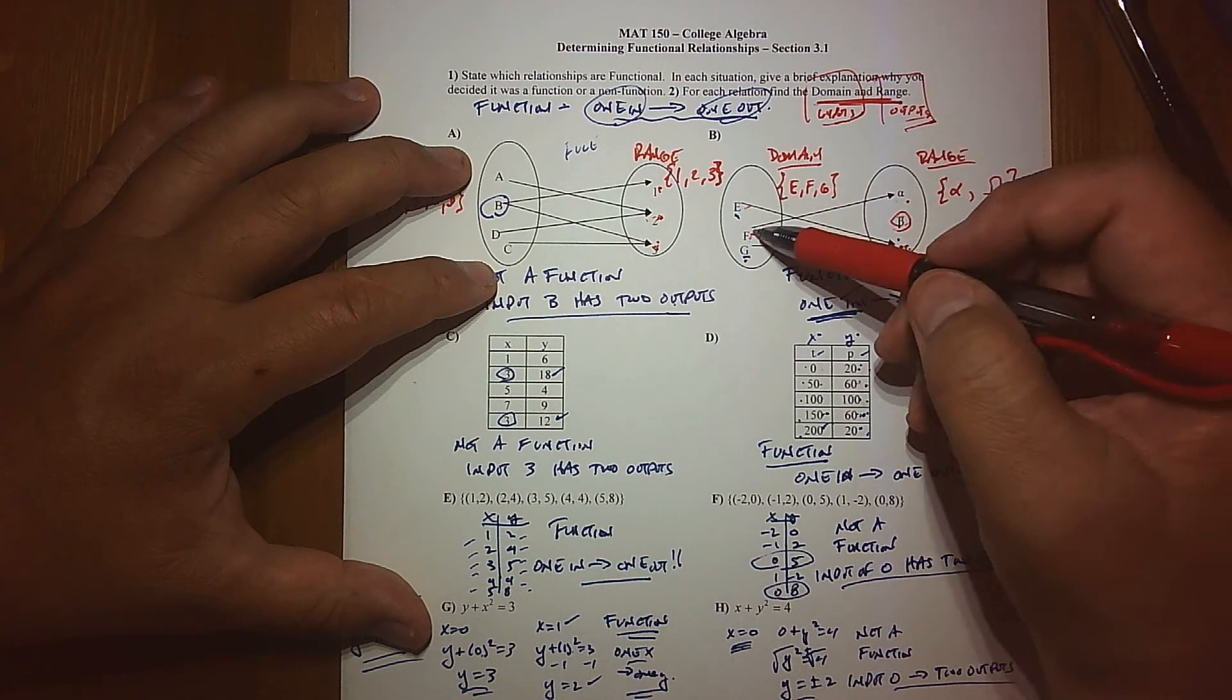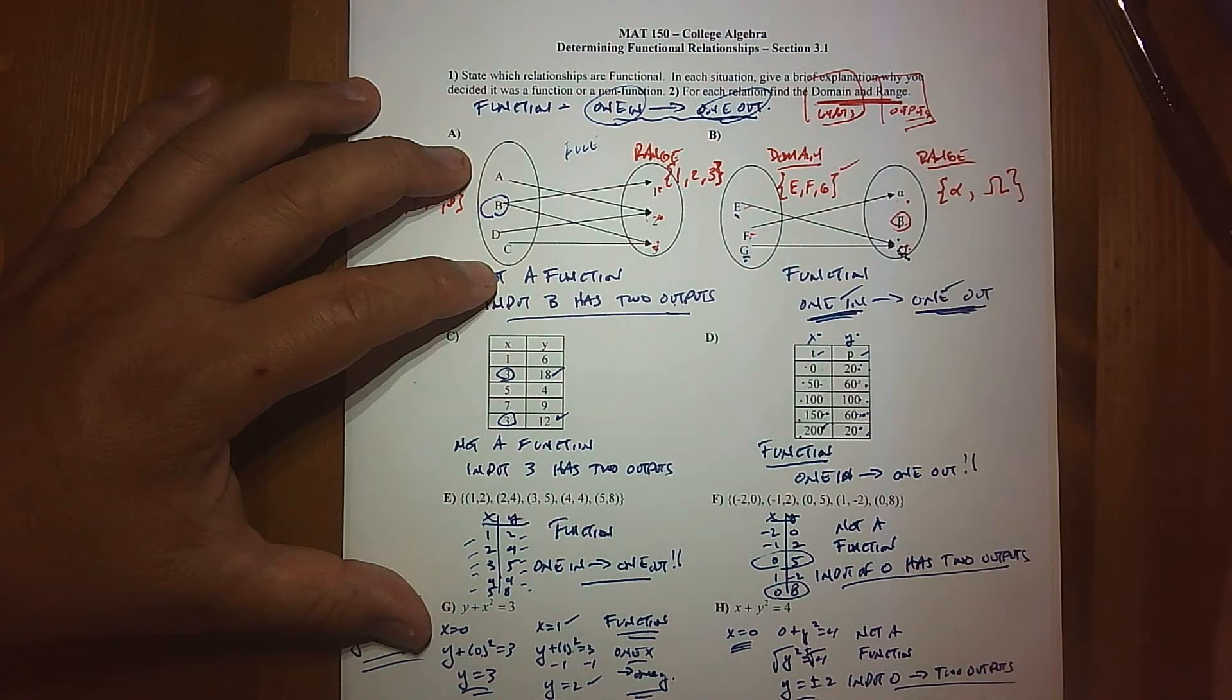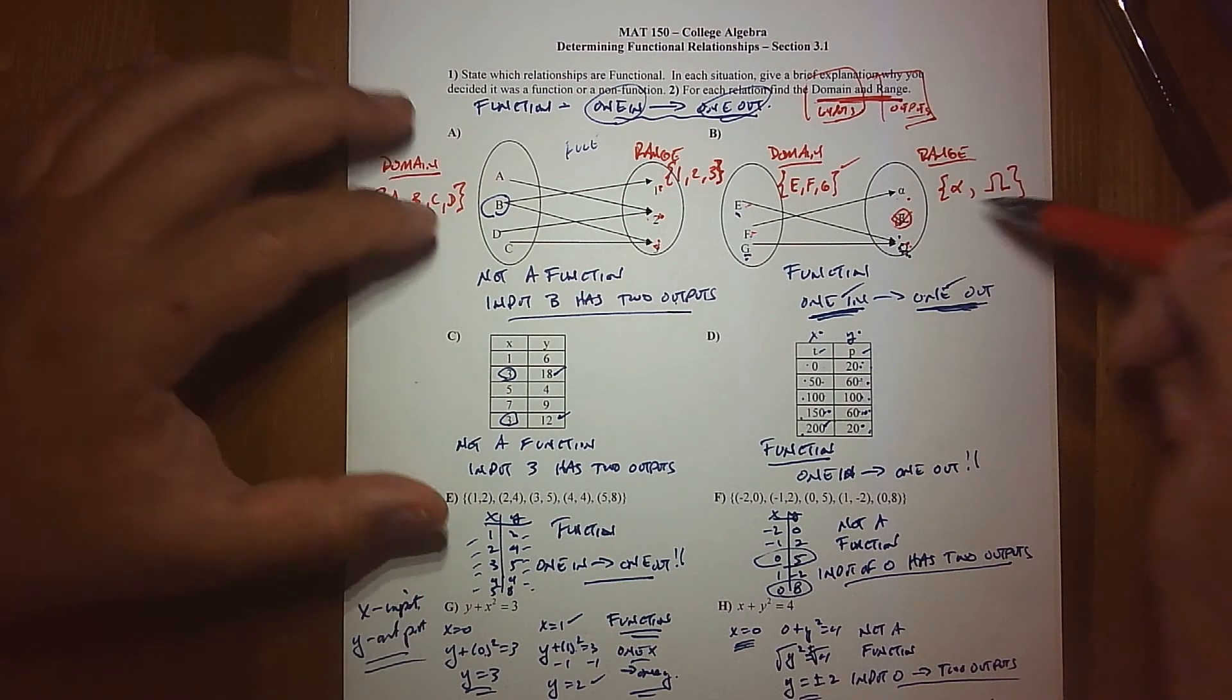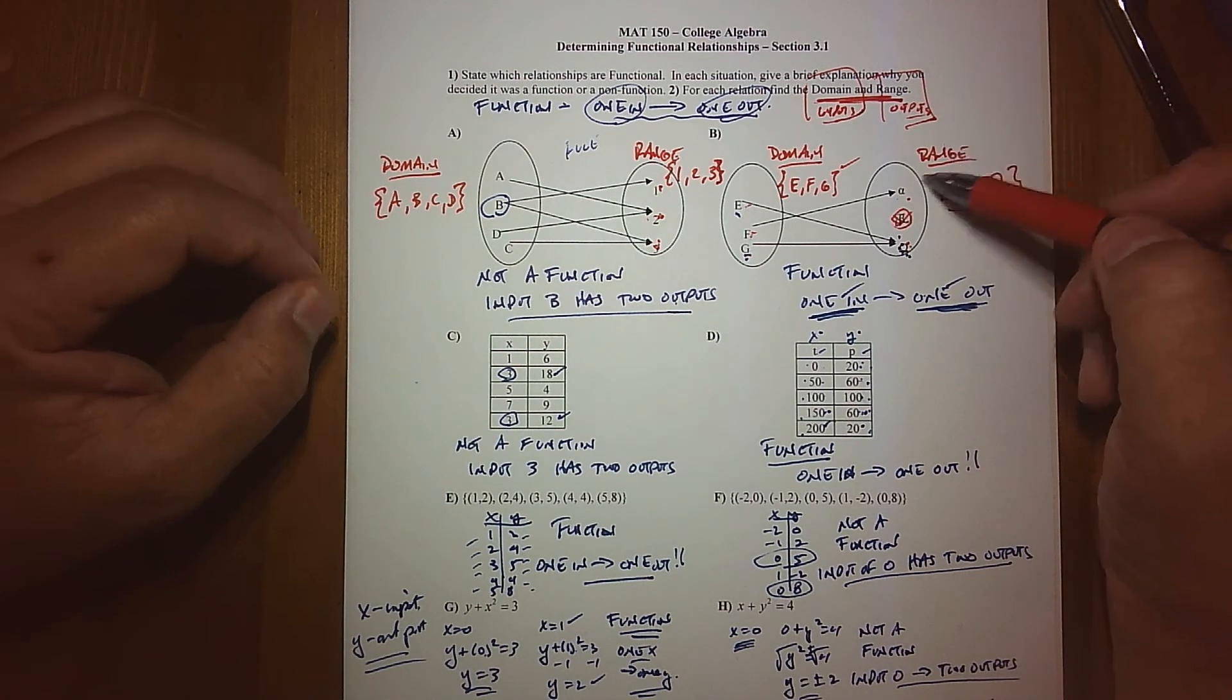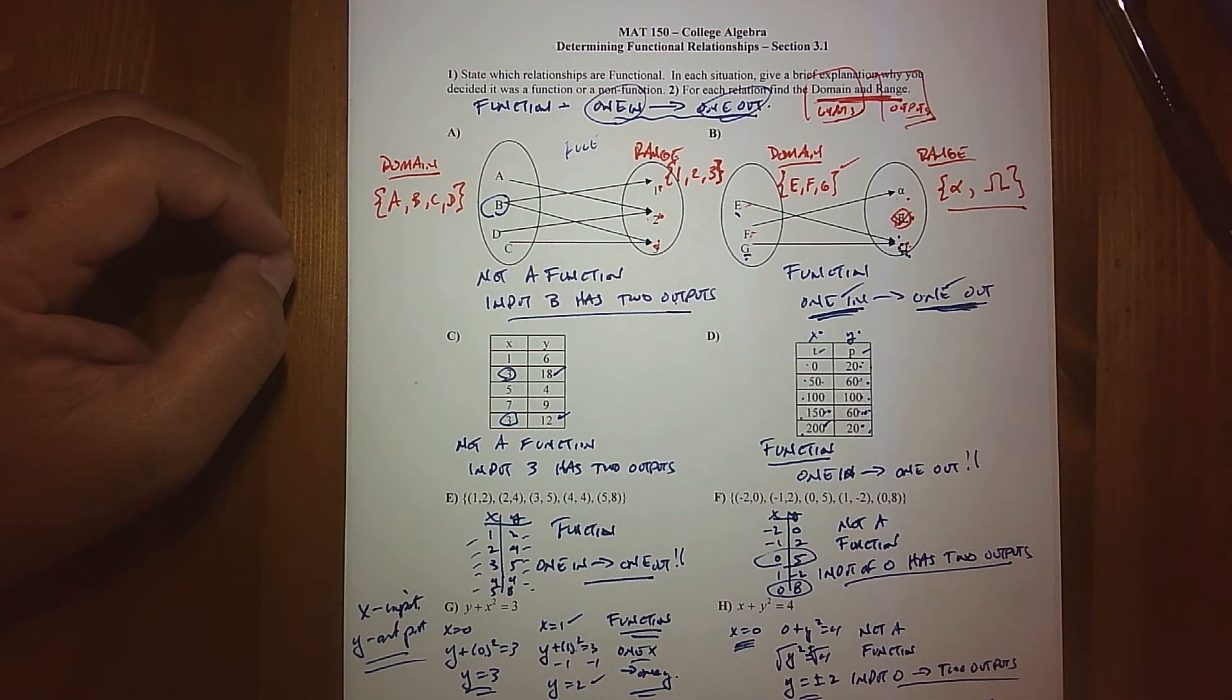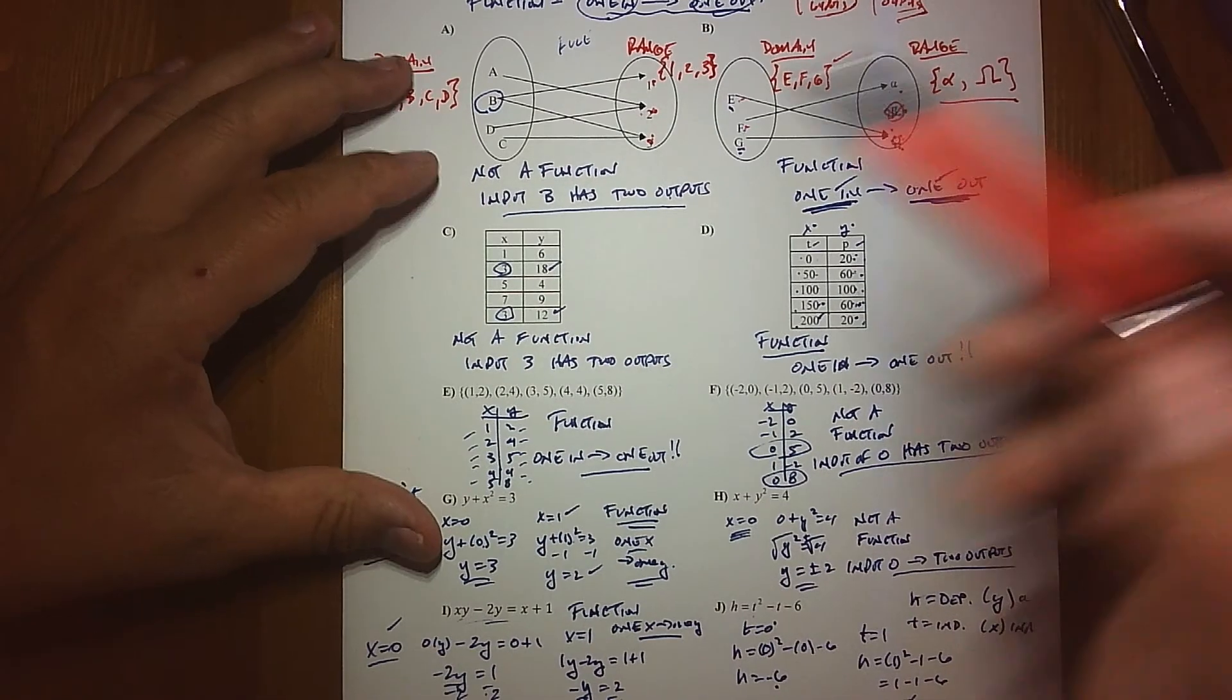But beta is kind of standing here a little lonely, but there's nobody who creates it. E doesn't create beta, F doesn't create beta, nor does G. So the items in the domain do not create that item there. So beta is just kind of an outlier. Nobody's really creating it, so therefore it's not part of the range. Remember the definition: the range is the set of outputs created by an input. So beta is sitting there but nobody's being matched to it.